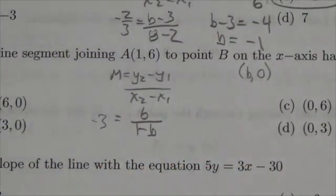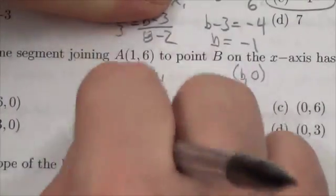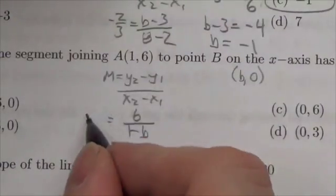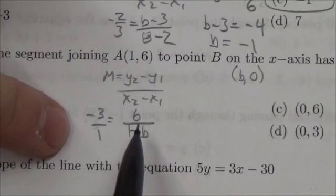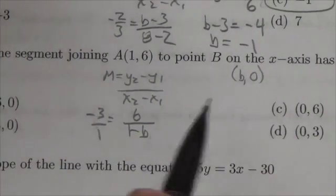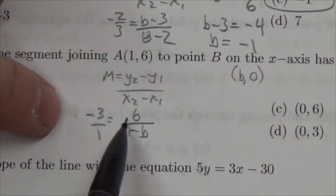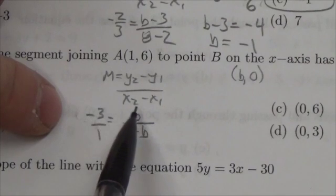Now once again, I can kind of compare these two. So negative 3 over 1 is going to be equal to 6 over 1 minus B. Well, to go from negative 3 to 6, I multiplied by negative 2.